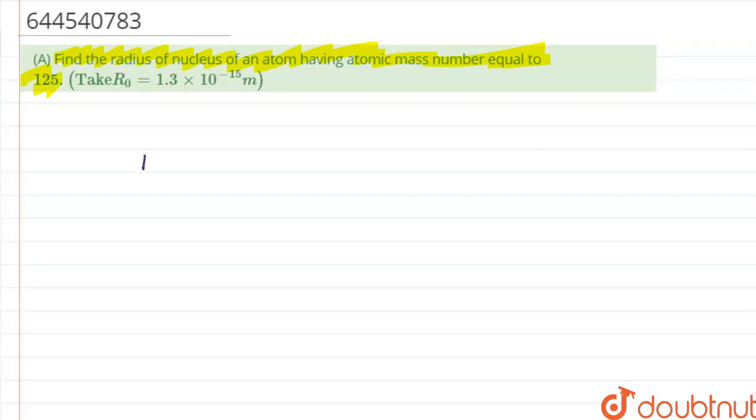In this question we will have to use the formula that is r is equal to r0 into a raised to power 1 by 3. Here, a is atomic mass. R0 is a constant having a value equal to 1.3 into 10 raised to power minus 15.